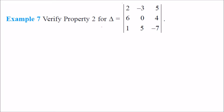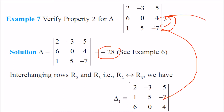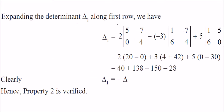To verify this property, let us take an example. We solve it first and get −28. When we interchange rows 2 and 3 — so row 2 comes to the position of row 3 and row 3 takes the second row position — when we take the determinant, it equals 28, which is the negative of −28.